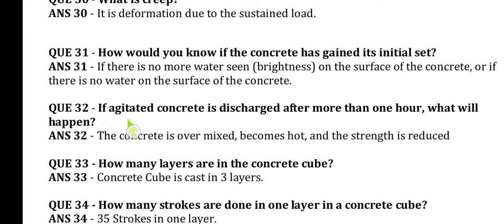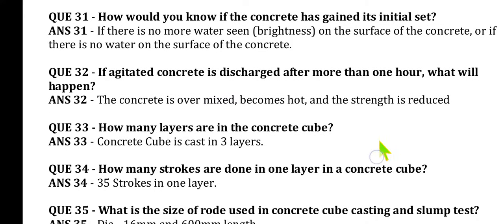Question 32: If agitated concrete is discharged after more than one hour, what will happen? The concrete is over-mixed, becomes hot, and its strength is reduced. Question 33: How many layers are there in the concrete cubes? Concrete is mostly poured or placed in 3 layers. The concrete cube is cast in 3 layers.